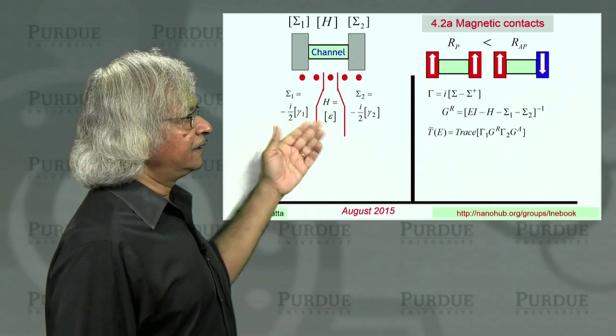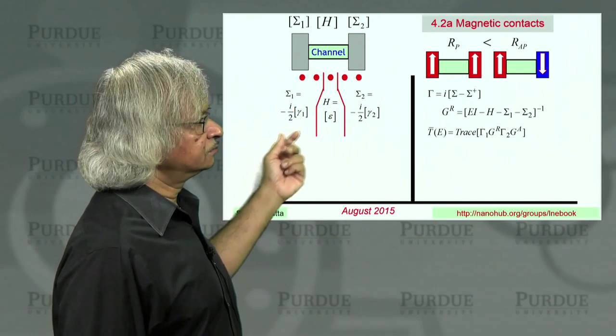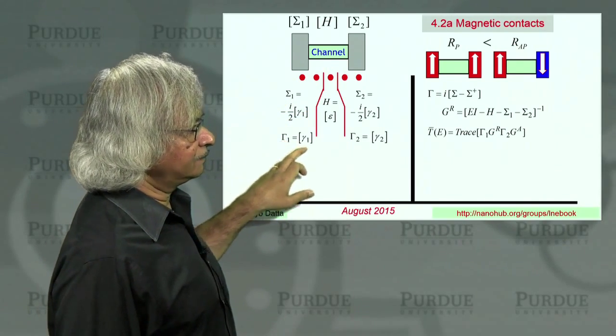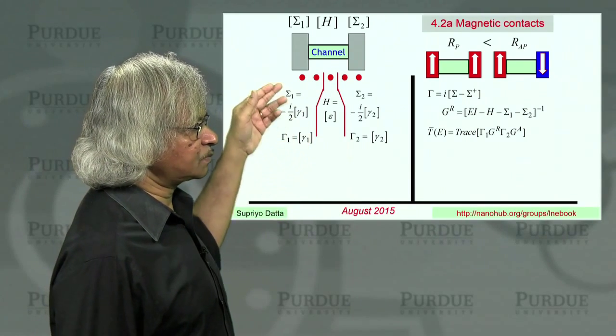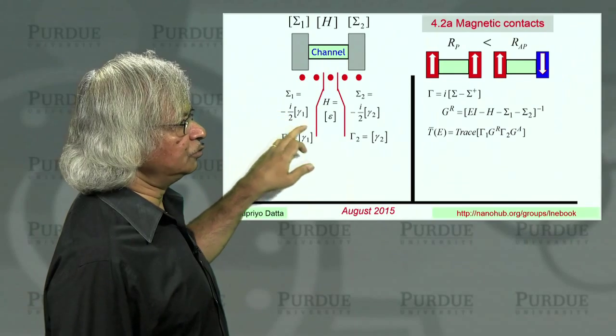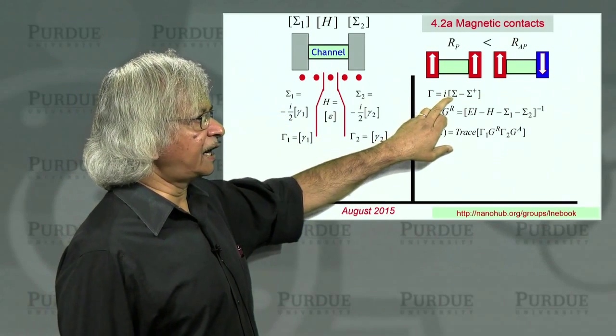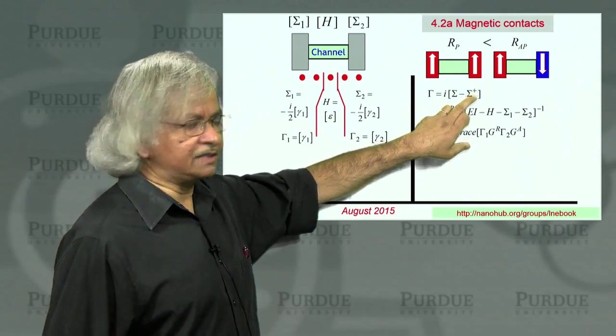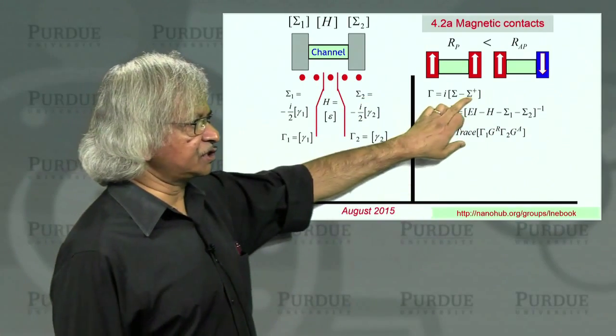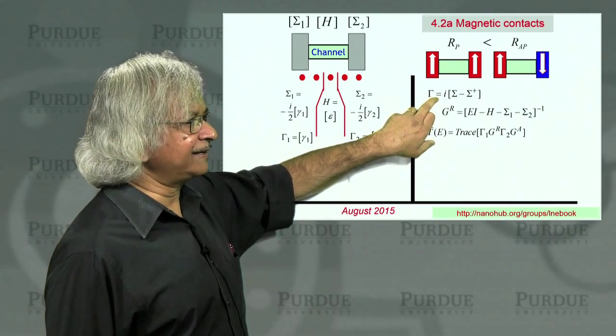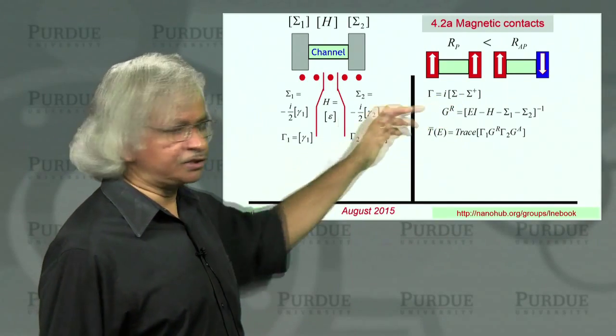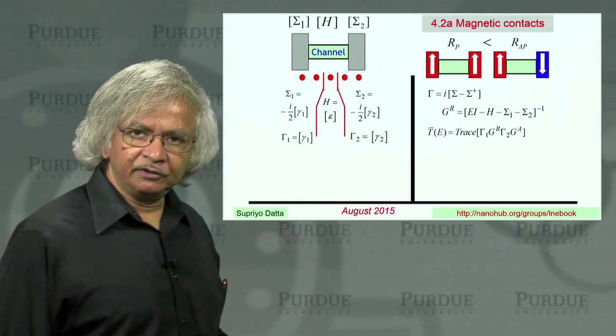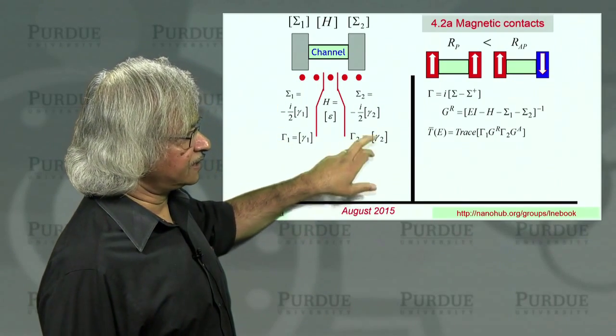Now, what about the sigmas? Well, let's say the rate at which it goes out is given by this gamma 1. And then, as you know, if the gamma, the rate at which it goes out is gamma 1, then the corresponding sigma would be minus i over 2 times gamma 1. So that when we define i sigma minus sigma dagger, and this dagger is conjugate transpose. But since these are one by one, transpose doesn't matter. So it's just conjugate. And so when you do this, what you get is like the negative imaginary part times 2.